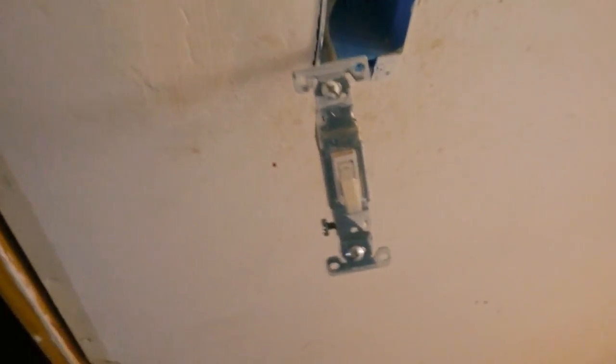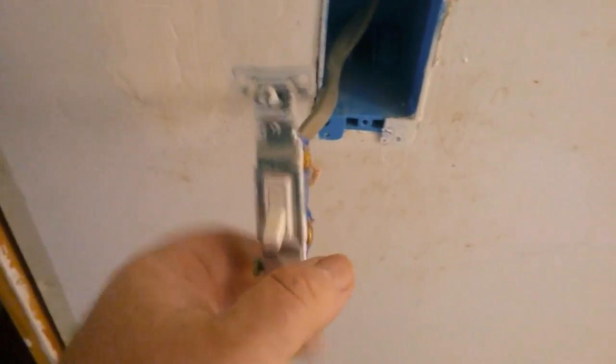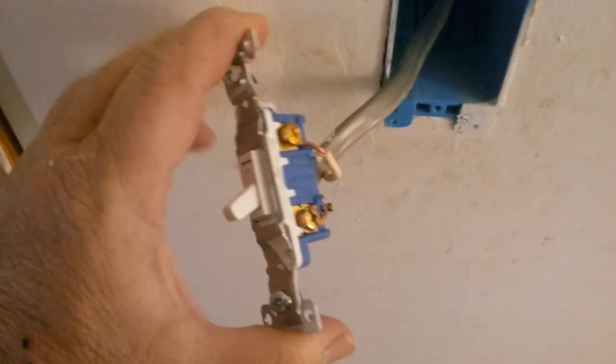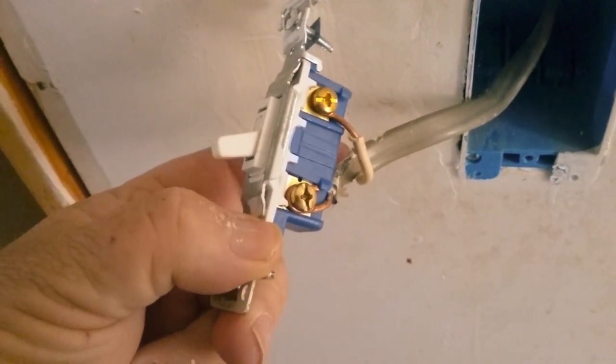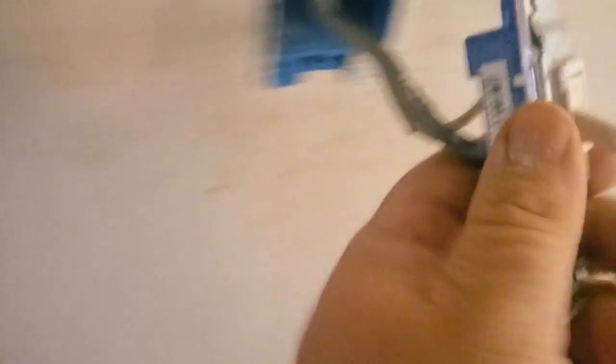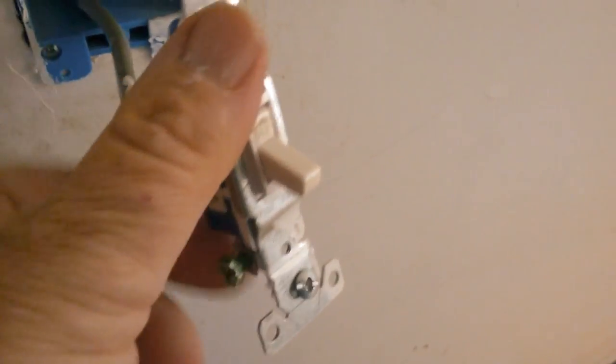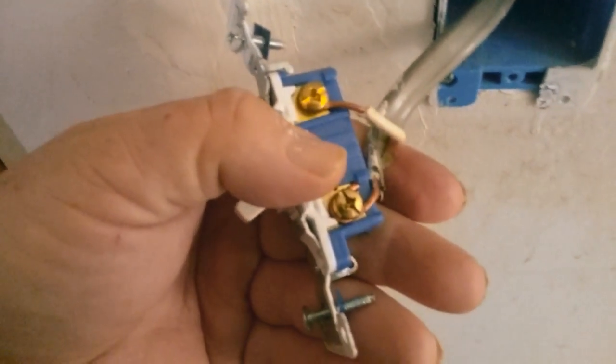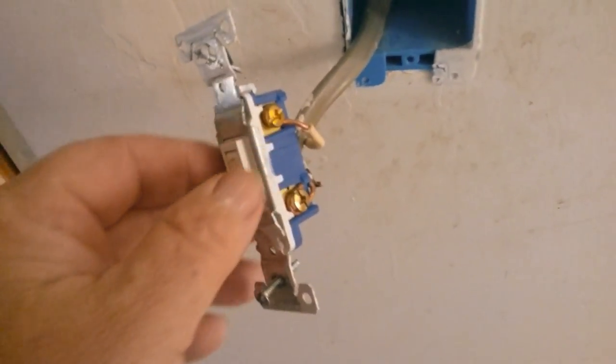Okay, I'm back. Turned the breaker off. So now, this is, you can see I have two terminals here. And if you notice anything special, there are only two wires to this switch. Got my ground plug here, no ground wire coming out. Again, this switch only has two terminals on it.